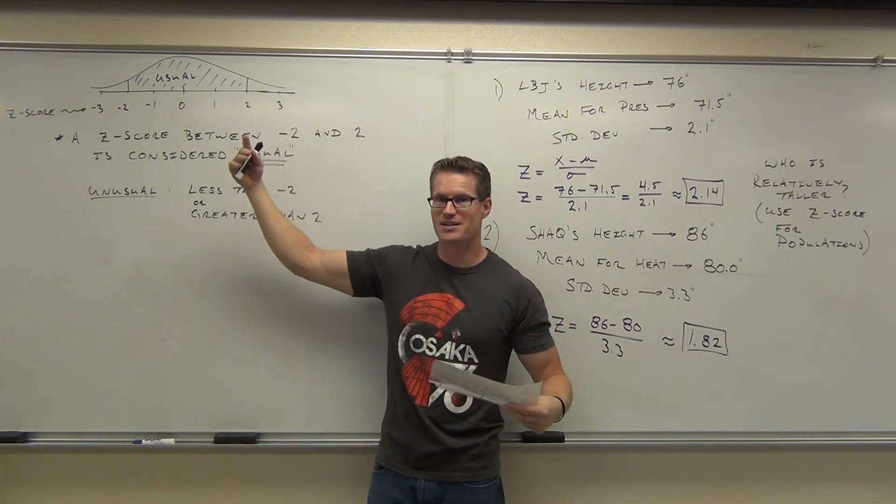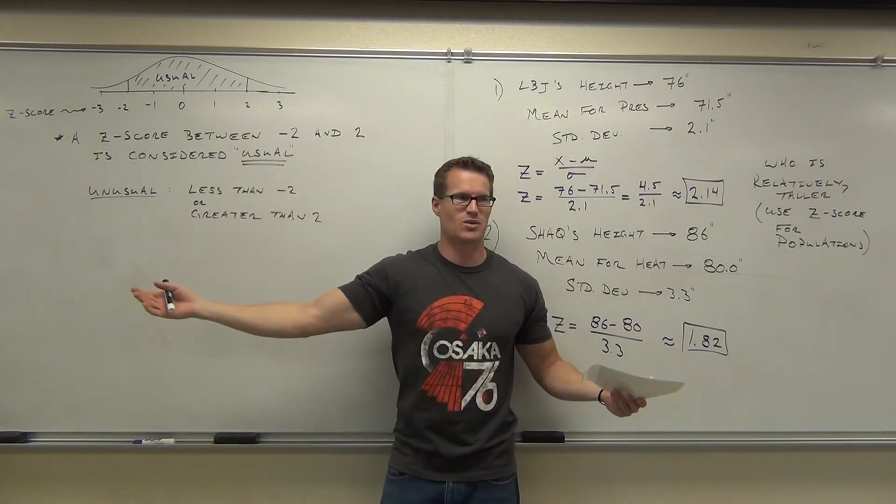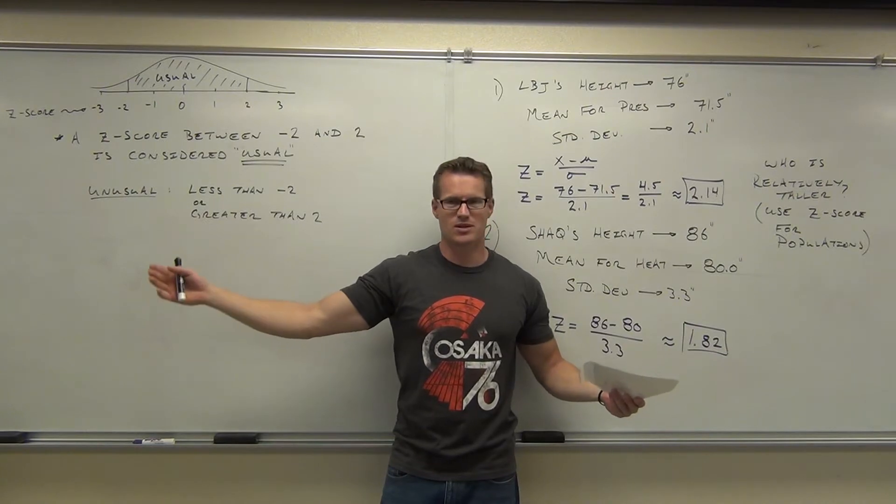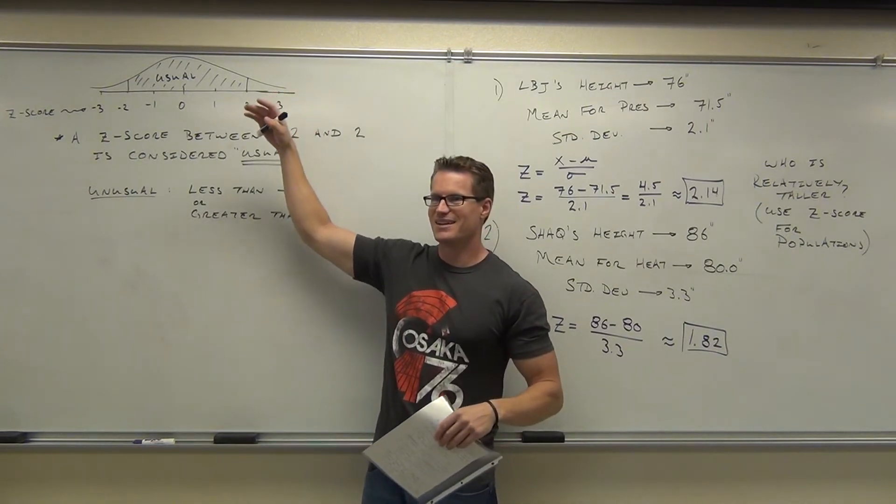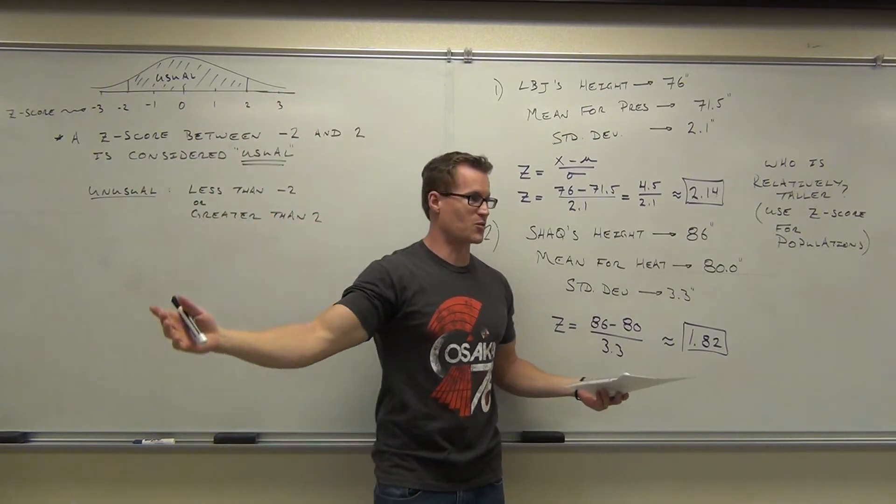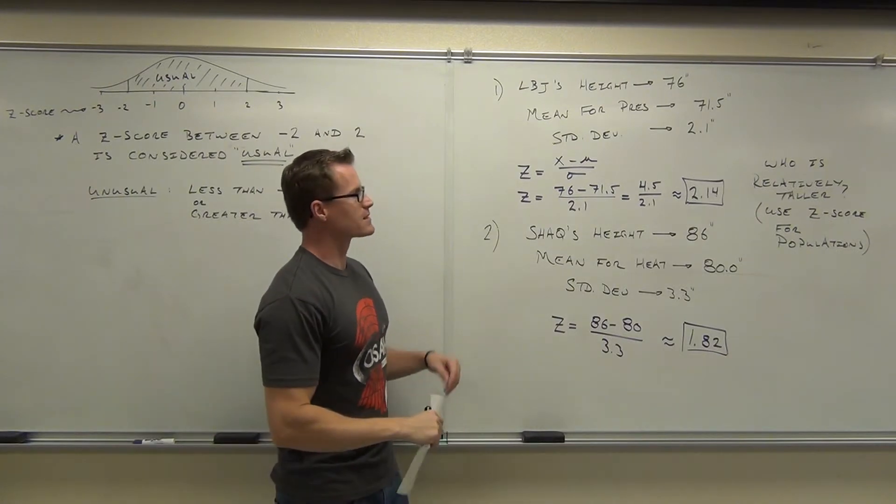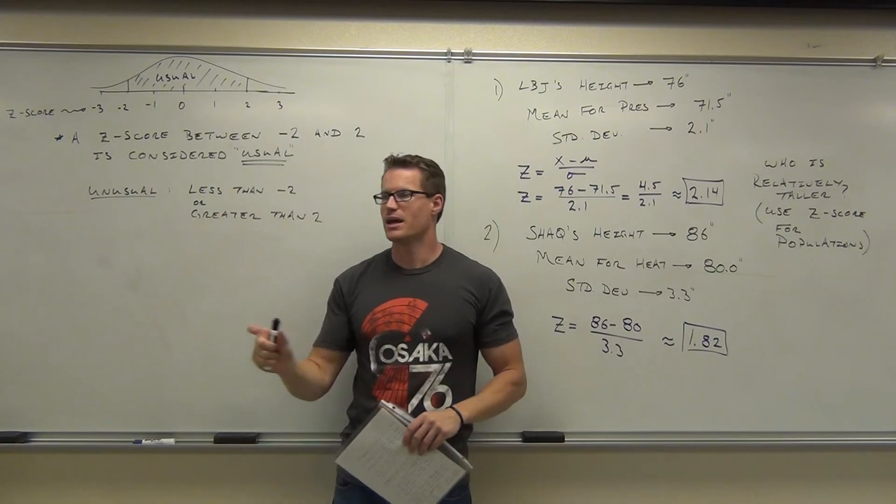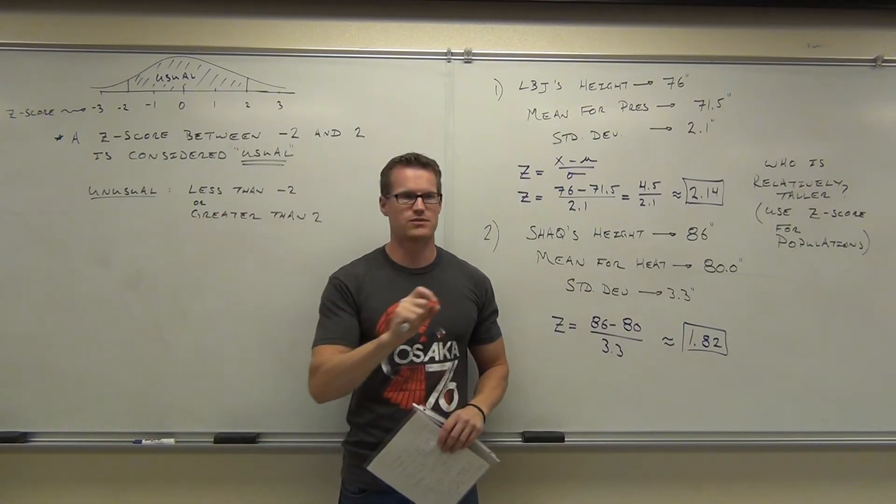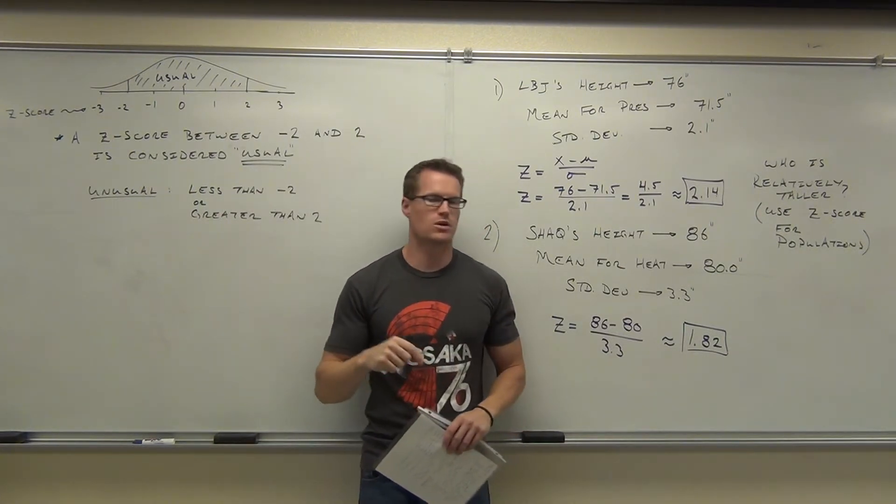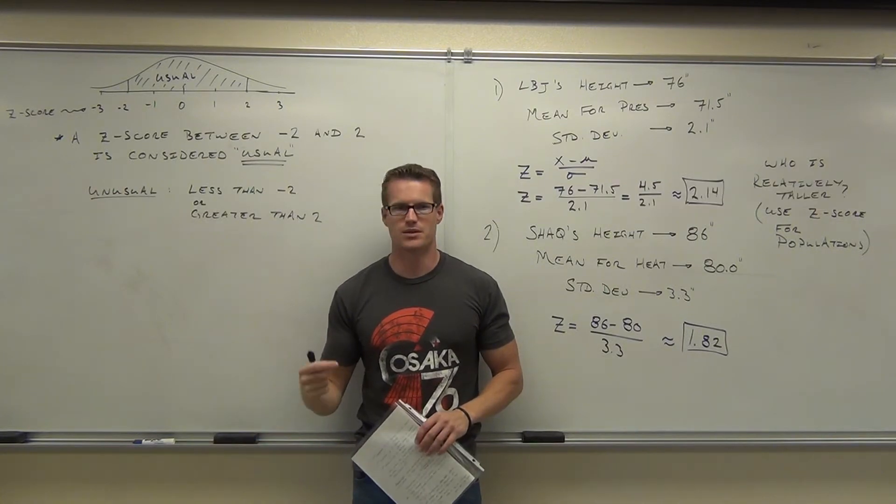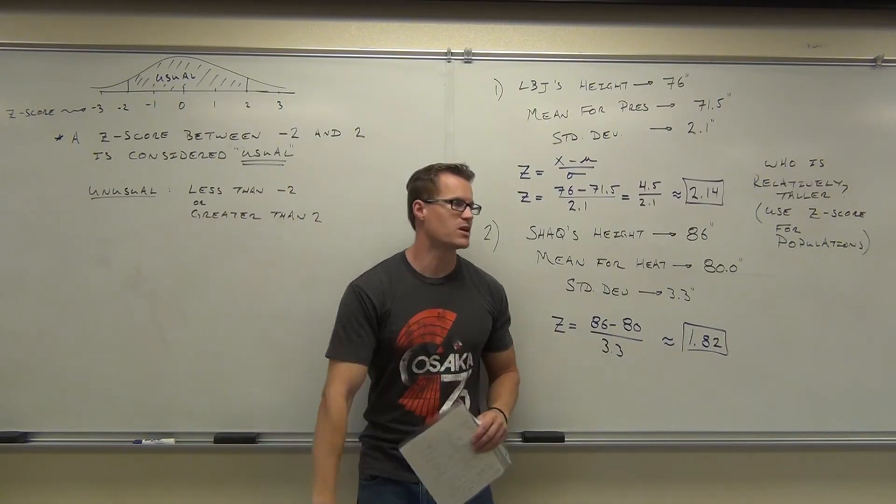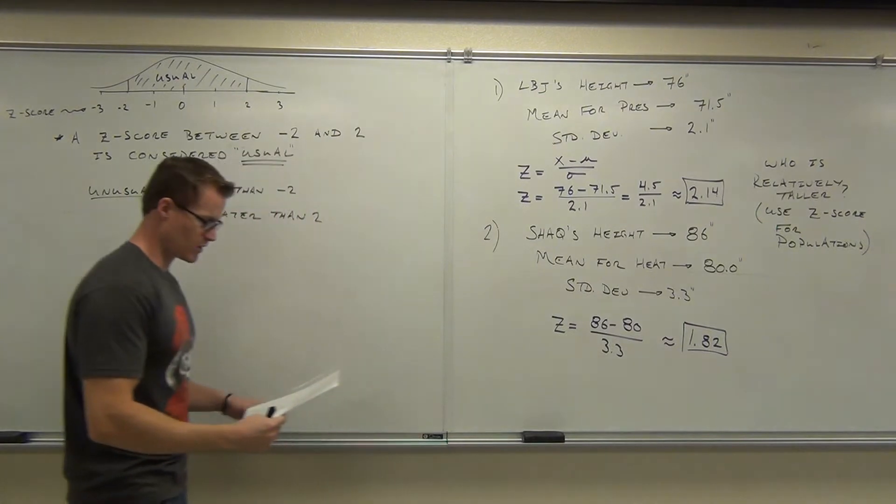That would be very unusual. Height-wise, I mean, clearly he could be president, he's qualified. But, joking. But height-wise, he would be very tall for president, okay? That's the idea. So, because Z score tells us the number of standard deviations over the mean, it can also tell us how rare a piece of data is. We are going to be using this to our advantage later on to determine whether or not hypotheses are true or false.